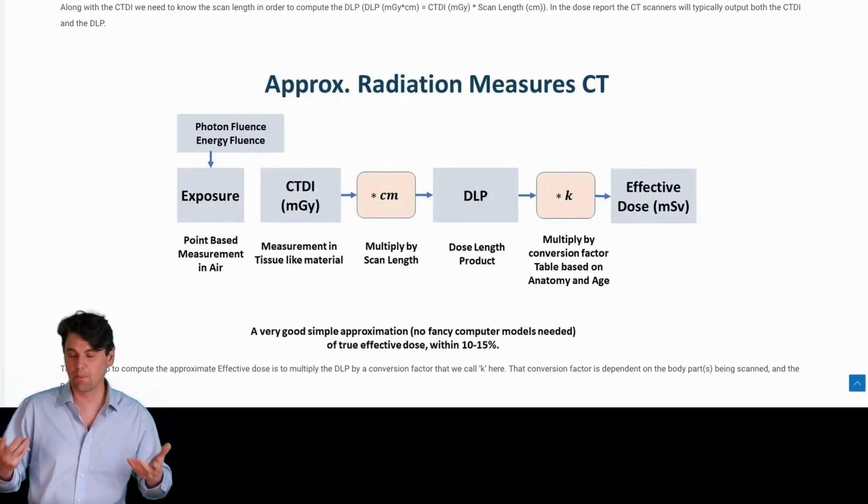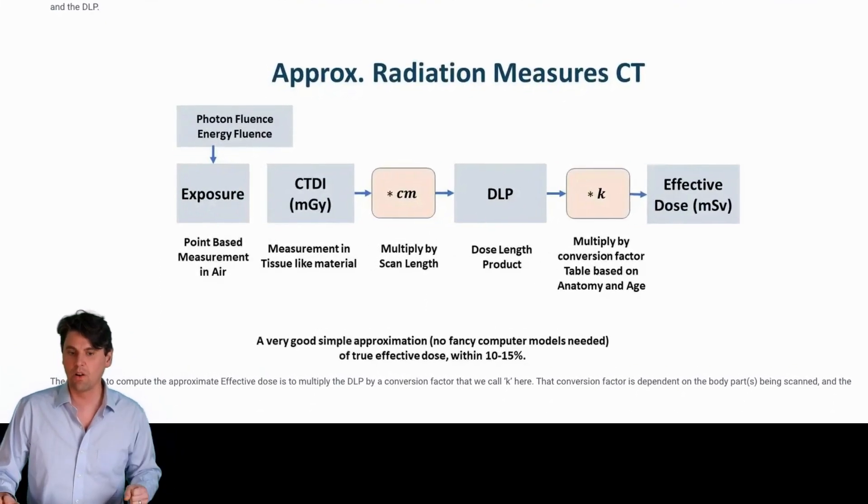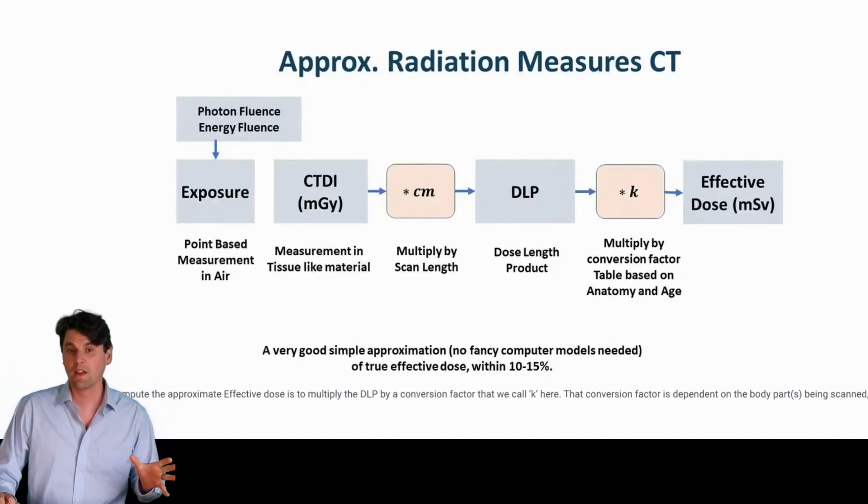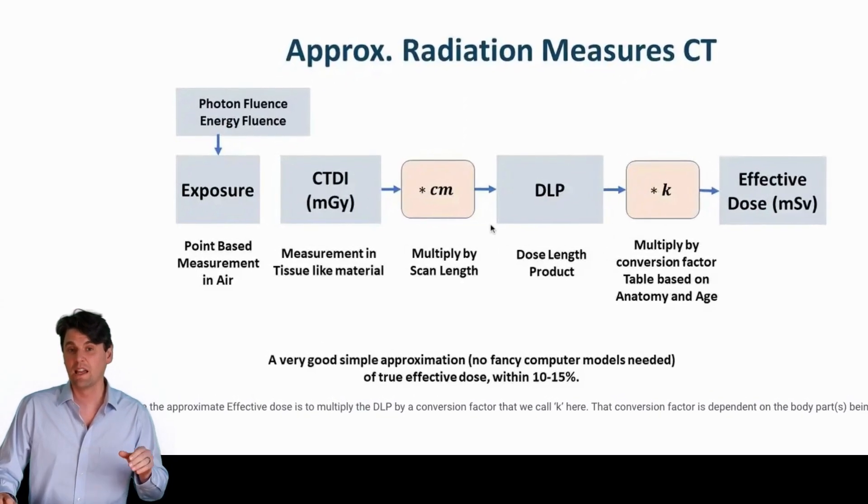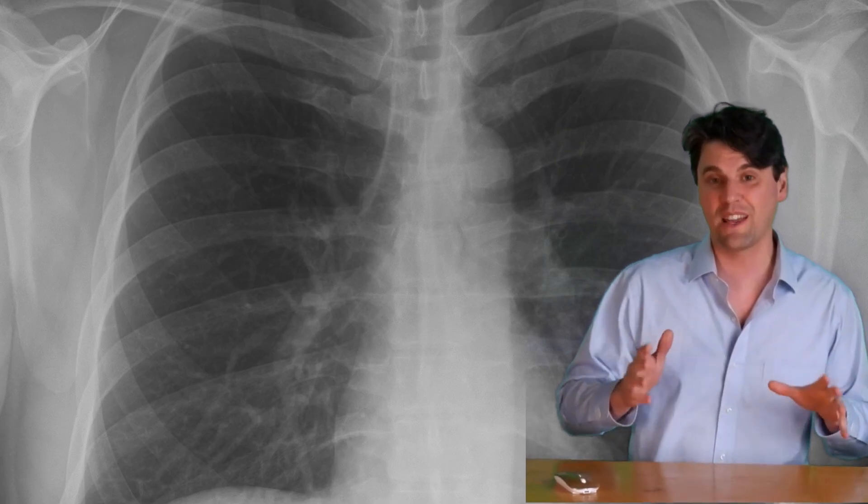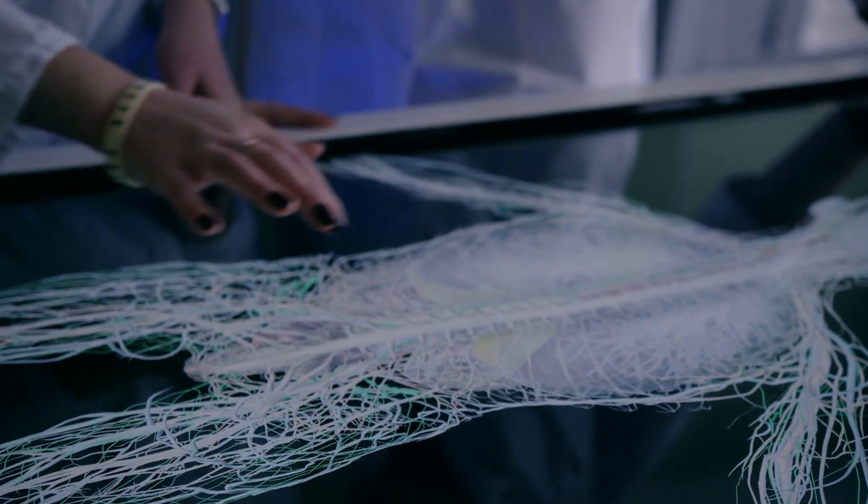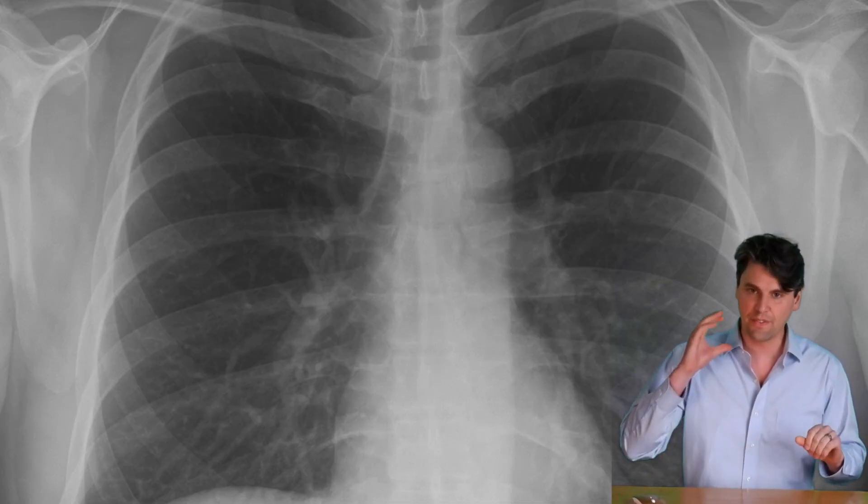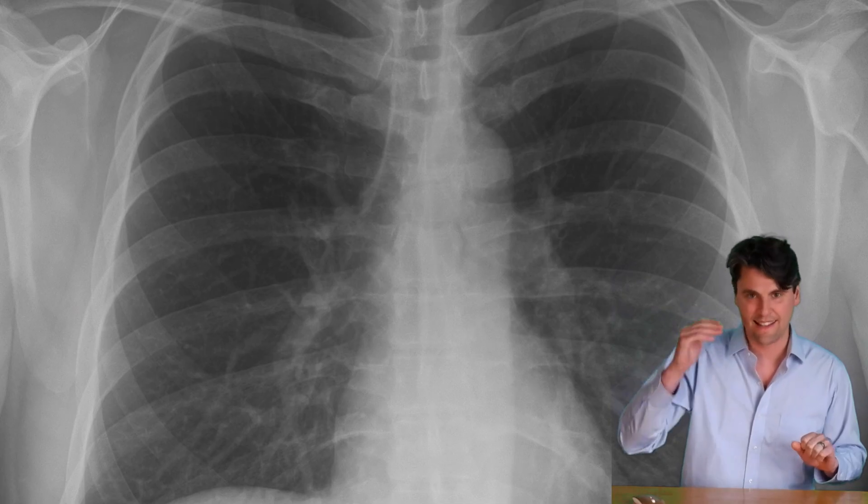In CT, we're typically using a simpler approximation than the full approach using Monte Carlo. We'll typically start with that CTDI measured in the plastic phantom, then multiply by the distance. That'll give us our DLP. The final step we need is a weighting factor. This is an approximate weighting factor which takes into account the age and the anatomy being irradiated. This weighting factor will take into account the specifics of the different types of tissues which are going to be irradiated, for instance, in a head scan or a scan of the head and neck.